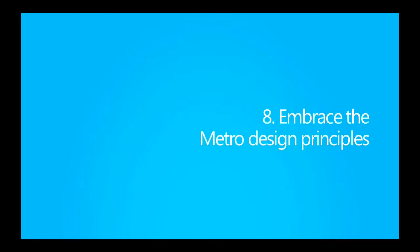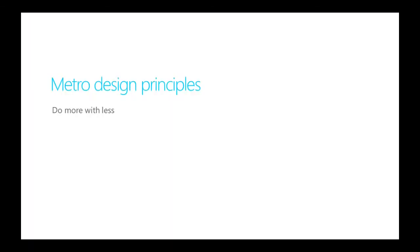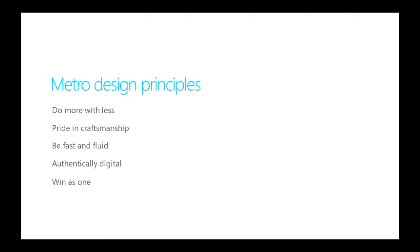Embrace the Metro design principles. Do more with less — show content before Chrome to let people focus on what matters. Pride in craftsmanship: details in visual styling, layout, and typography matter. Be fast and fluid: design for touch with motion and ergonomics in mind. Authentically digital: be connected and alive with live tiles and notifications, and roam to the cloud. Win as one: use contracts to work together with other apps to complete scenarios. These principles form a framework when you are making decisions around the flow, interactions, and visual design of your app.